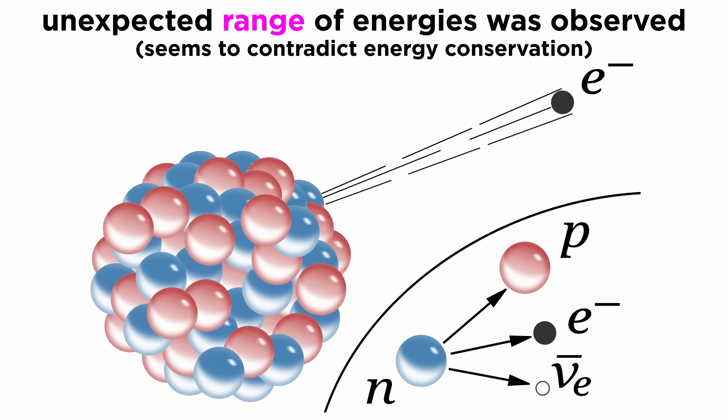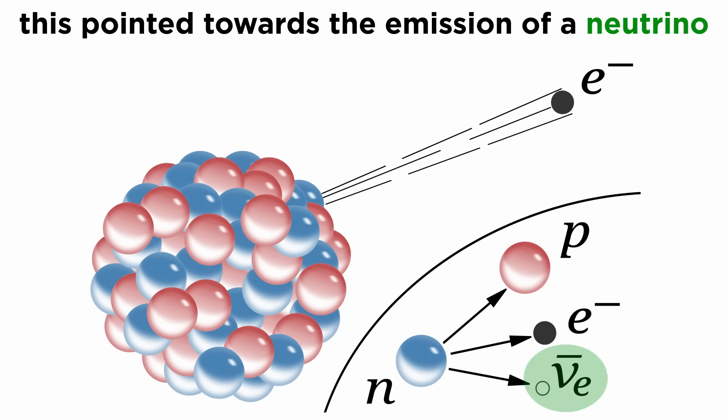It was expected that by conservation of energy, these electrons and positrons would all be produced at the same energy, rather than a range. This either indicated that energy was not conserved, or that another particle was being emitted and not detected. With an extremely small mass and neutral charge, neutrinos were proposed as the undetected particle to solve the beta decay energy dilemma.